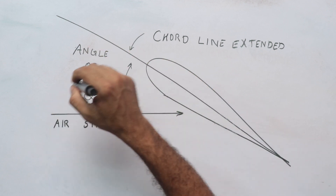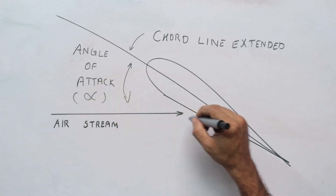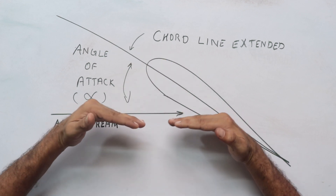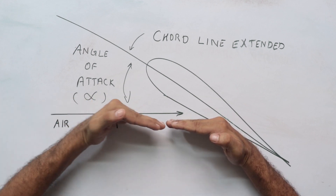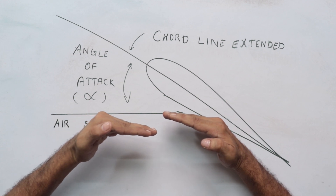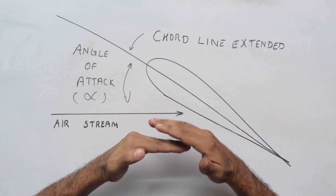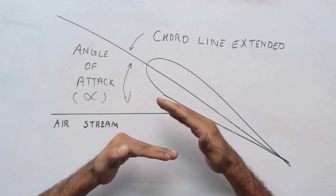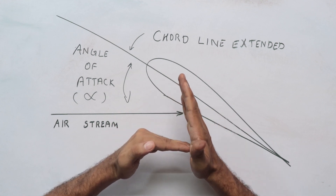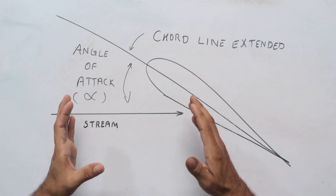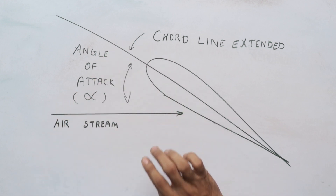An important concept related to Aerofoils is the angle of attack. The angle of attack determines how much lift the Aerofoil produces. At a certain angle of attack, the Aerofoil generates lift, but beyond a critical angle, it can stall. We will go into more detail on angle of attack in a future episode.